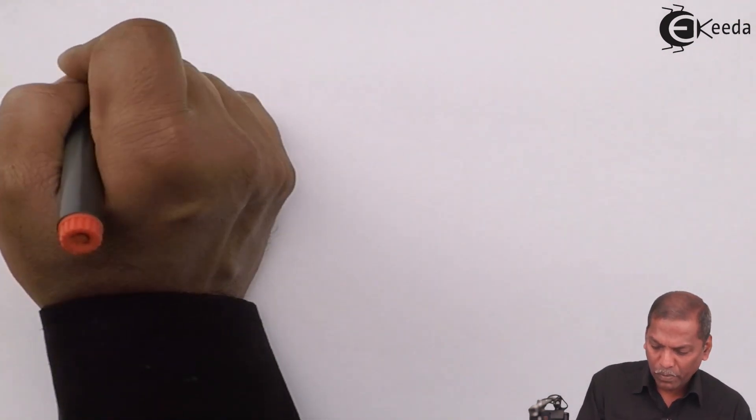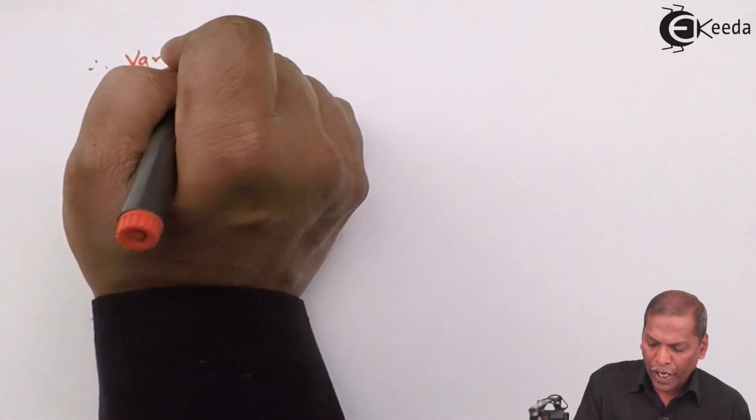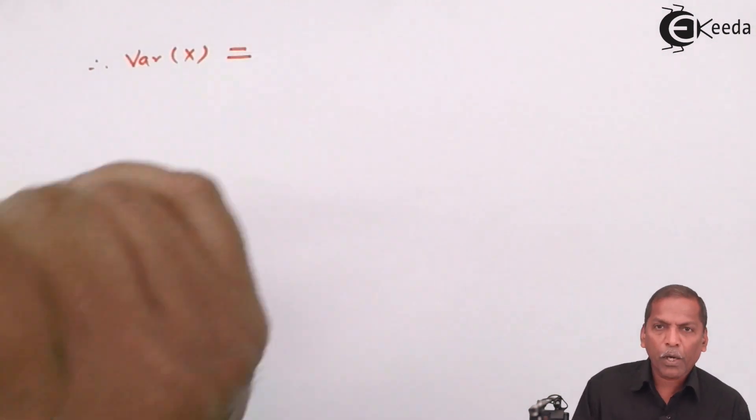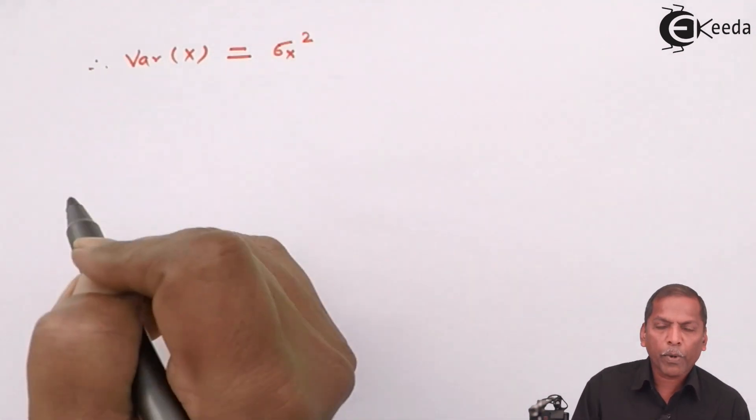Secondly, here, we have to find variance of X. Therefore, variance of X is equal to sigma X, the whole square.